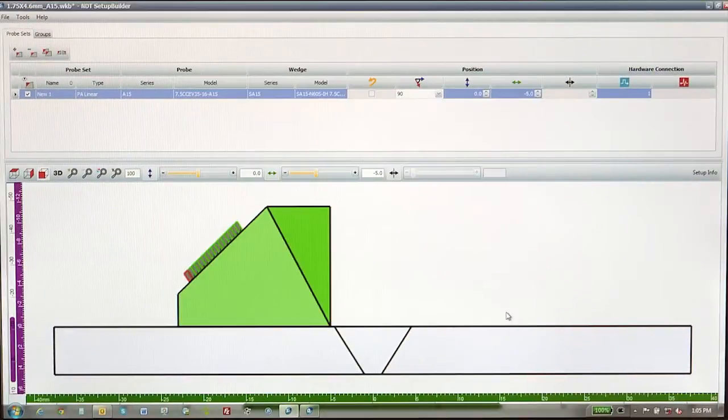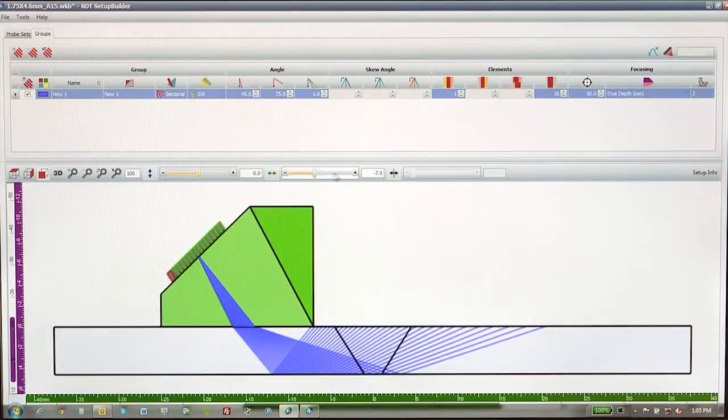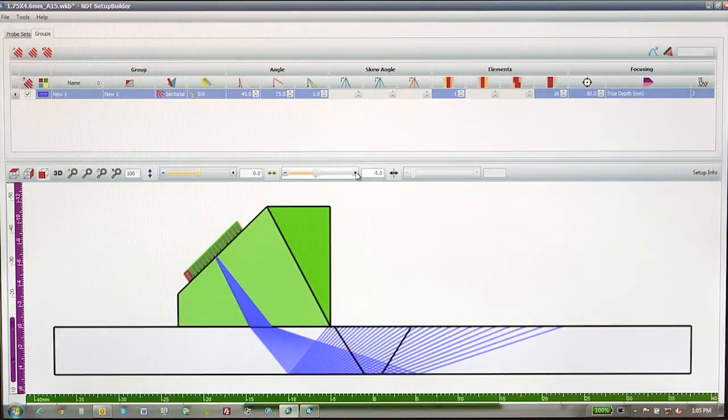The inspection consists of a multi-angle S-scan made of many A-scans that comply with existing codes such as ASME, EN, and similar, for which the beam size, beam angle, and beam focus are programmable by the user.